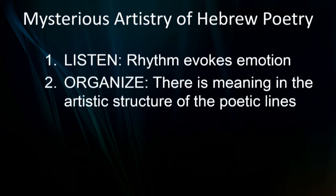The second thing is to organize the lines, because there is meaning in the artistic structure of the poetic lines. Poetry is done with what we call parallel lines — they're in parallel, so there's some relationship between them. They're done in an artistic structure that is going to lead to meaning. So first you listen and let the rhythm evoke the emotion, and then you have to organize these lines.